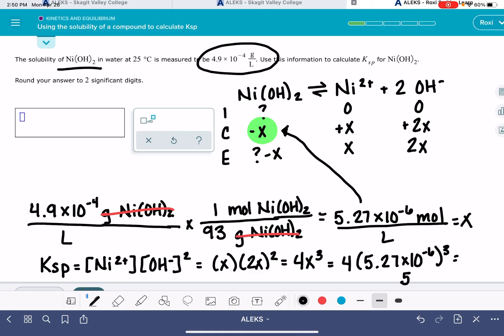This works out on my calculator to be 5.85 times 10 to the minus 16. Alex wants this to two significant figures, so it's going to be 5.9 times 10 to the minus 16.